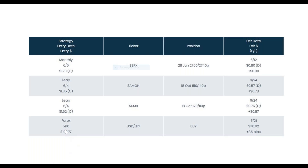Here it is right here on our chart that shows our current trades. This was our Forex trade we made. We got in and just bought the Forex pairing. We got in at 109.77 and got out at 110.62 for 85 pips.